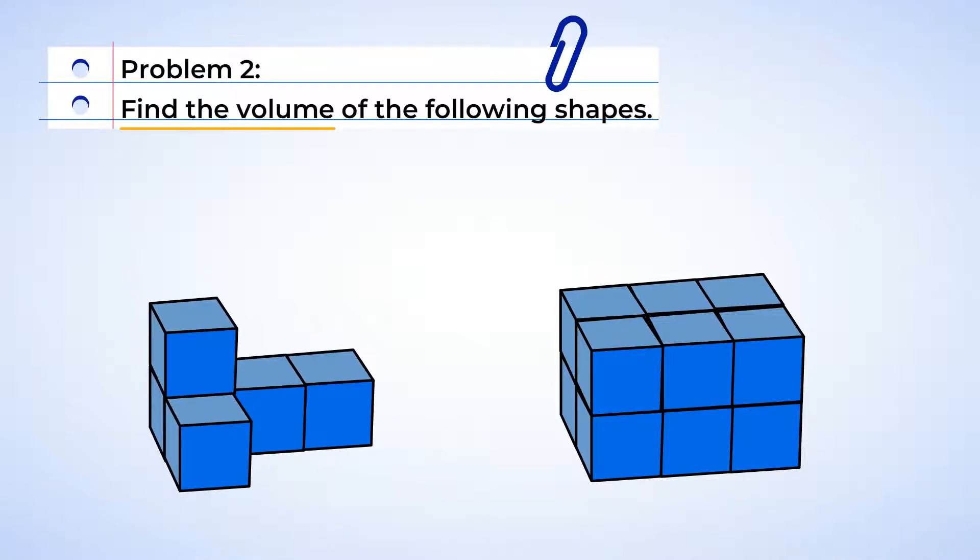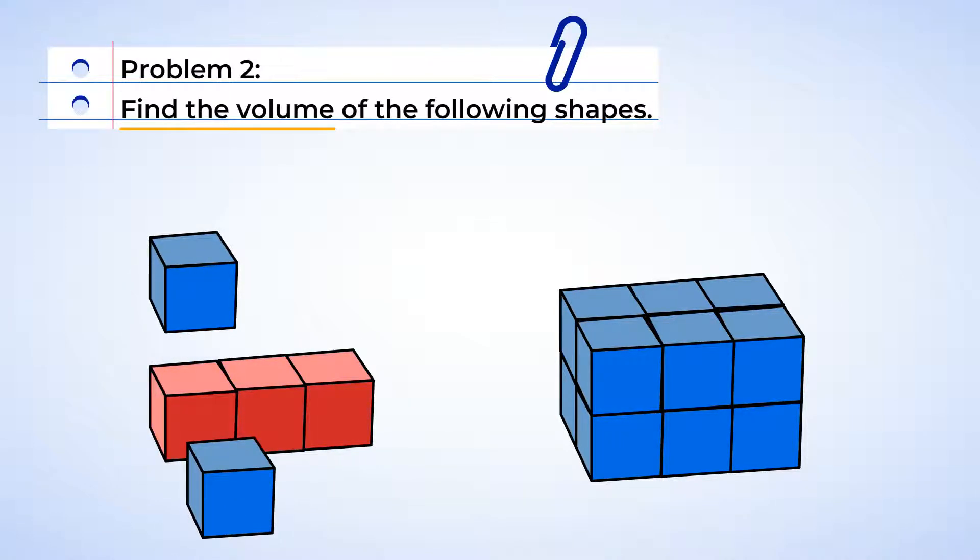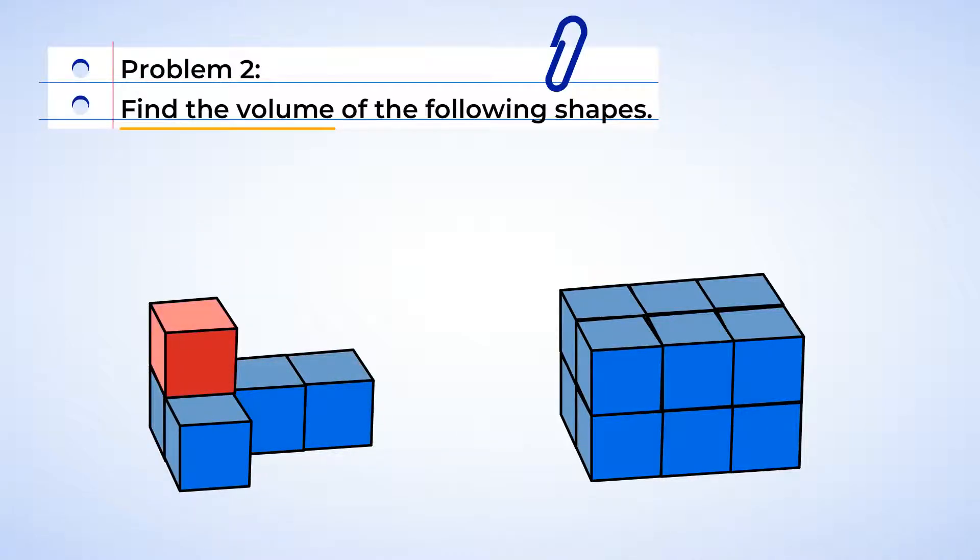All right, this first shape has one, two, three blocks in the back row. And there's one up on top and one out in front. And that gives us a total of five cubic units. So the volume of this shape is five cubic units. Nice!